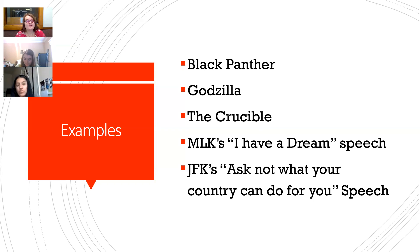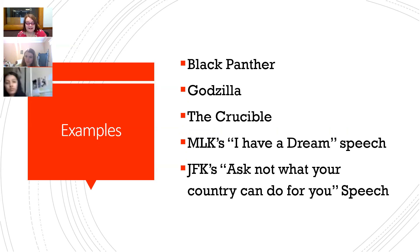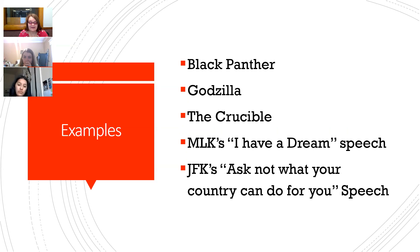Here are some examples of works that are really good to analyze in social context. Black Panther, the Marvel movie, is a really good one because we have these two characters: T'Challa, who's the Black Panther, and his cousin Eric, the Killmonger. They're kind of set up as one being like Martin Luther King Jr. and one being Malcolm X — they both have the same goal, they just have a different way of achieving it.